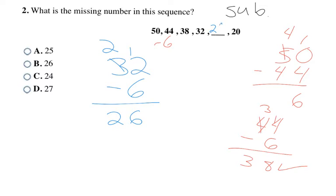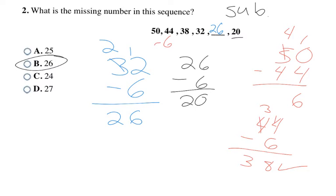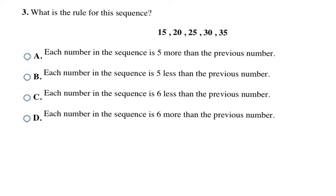To double check, 26 minus 6 equals 20, which matches the number after the blank. That confirms my answer without a doubt, and that's letter B.